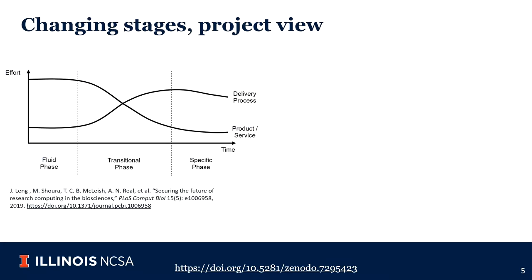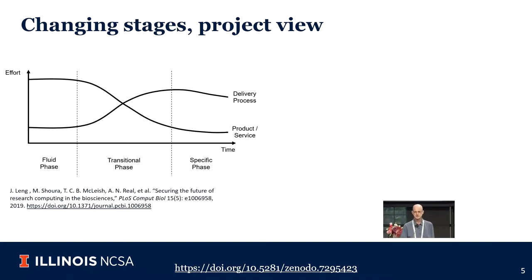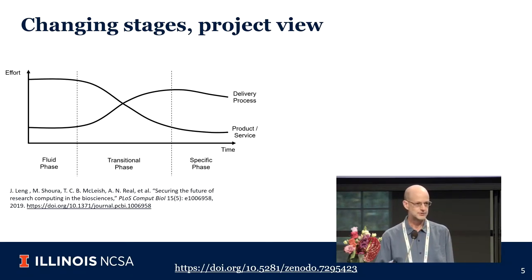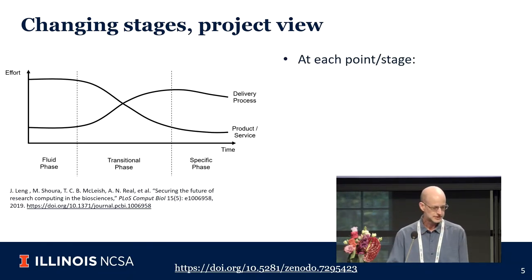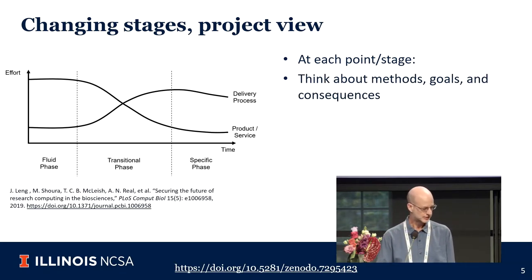One way of thinking about this is similar to any other product development: when you're initially developing a product, you're really focused on the product itself. Over time, as it becomes more mature, you move to a point where you're focused not on development but on how the product is being used — who your users are, what they're doing, how you support them. If you're moving software from supporting your own research to supporting other people, you have to really change phases along this path.